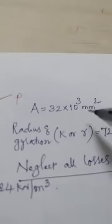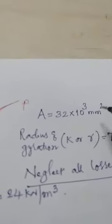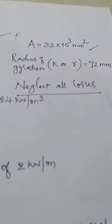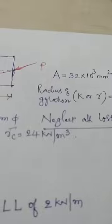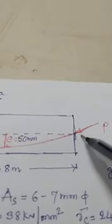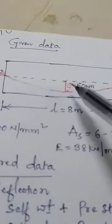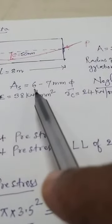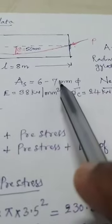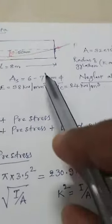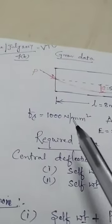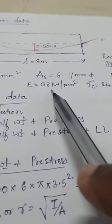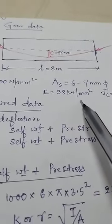The second problem is similar, but cross-section dimensions are not given. Instead, area is given directly and radius of gyration is given. Loss is neglected (no loss). Eccentricity at the ends is not given — it is zero — only eccentricity at mid-span is given. Prestressing force is not given directly; instead, the area of steel is given: 6 cables, each 7 mm diameter, and prestress fs = 1000 N/mm². Young's modulus is given directly as 38 kN/mm².